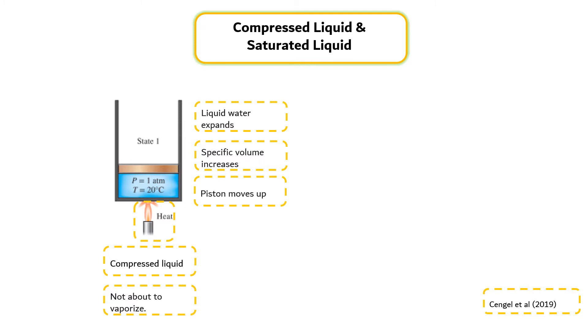As more heat is transferred, the temperature keeps rising until it reaches 100 degrees C as shown in the right figure. At this point, water is still a liquid, but any heat addition will cause some of the liquid to vaporize. That is, a phase change process from liquid to vapor is about to take place, and this is called a saturated liquid.